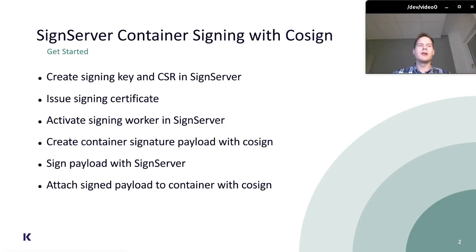In this tutorial I will start by creating a signing key stored in the SignServer database and create a certificate signing request or CSR for this key. I will use this to issue a digital signing certificate and import that back into SignServer. I will then create a simple Docker container image and put that into a registry. Using CoSign I will create the payload that describes this container image, sign it using SignServer, attach the signed payload to the container image, and finally show how to verify signed container images.